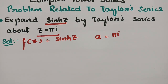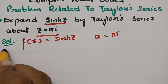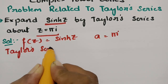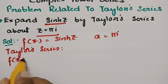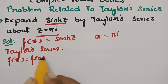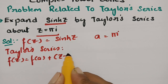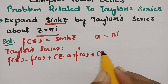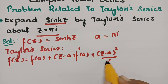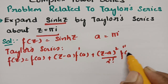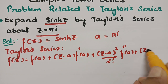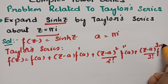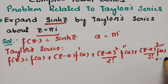So according to our problem, we need the Taylor series expansion. The Taylor series is: f(z) = f(a) + (z - a)·f'(a) + (z - a)²/2! · f''(a) + (z - a)³/3! · f'''(a) + and so on.